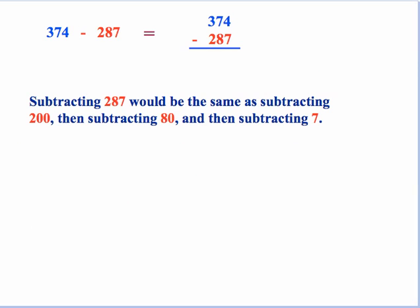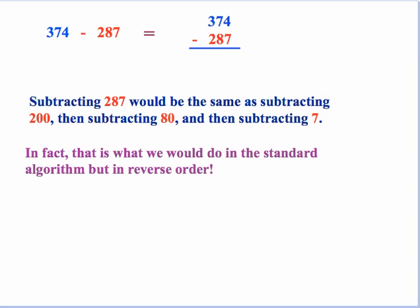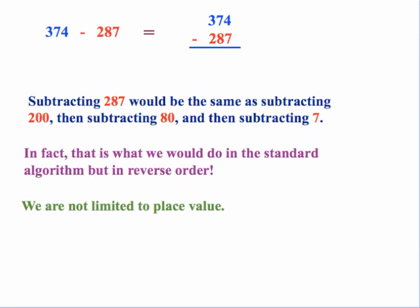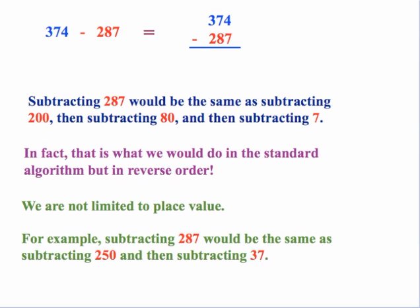Now numerically it would look like this. We're not jumping the gun. We're not dealing with negatives here. What we have here, I am simply saying that subtracting 9 is the same thing as subtracting 7 and then subtracting 2. So taking that basic idea, here subtracting 287 will be the same thing as subtracting 200, then subtracting 80, then subtracting 7. In fact, that's what we do in the standard algorithm, but we do it in reverse order.